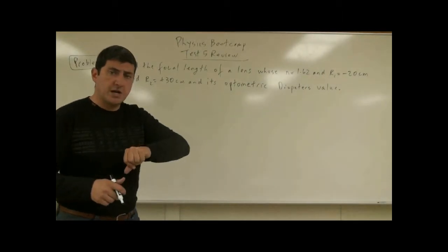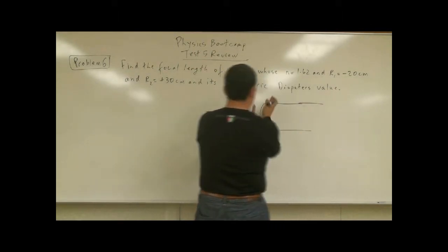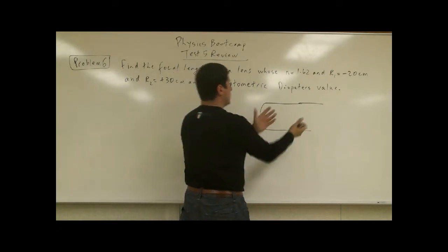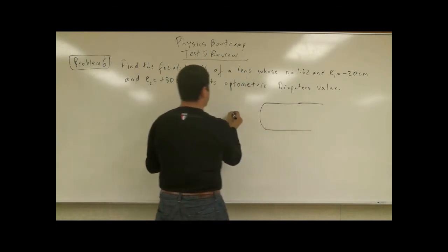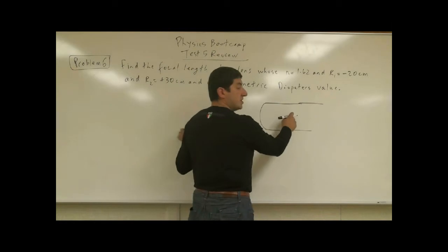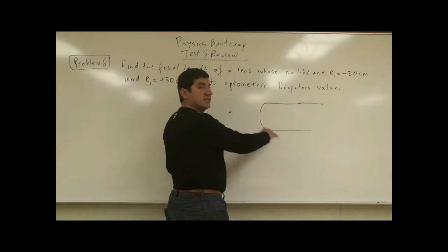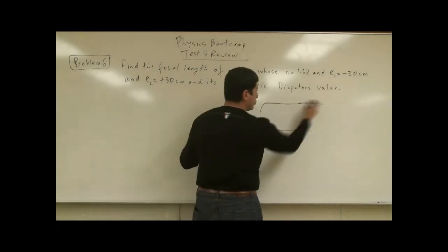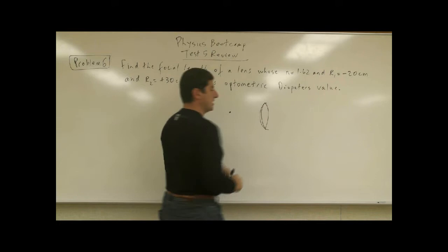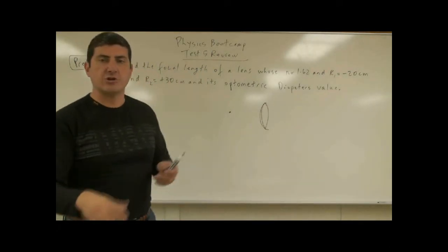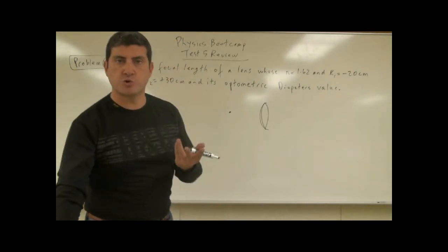In the previous problem I told you how to calculate the focal length when you have one surface — one side is curved and you want to know where the image is. You could put an object outside and find where the image is inside the lens. That's only one side curved. What if two sides are curved? Then it might look different. So let's talk about lenses such as eyeglasses whose two sides have some kind of curvature.